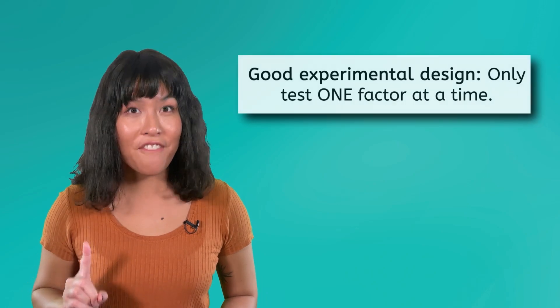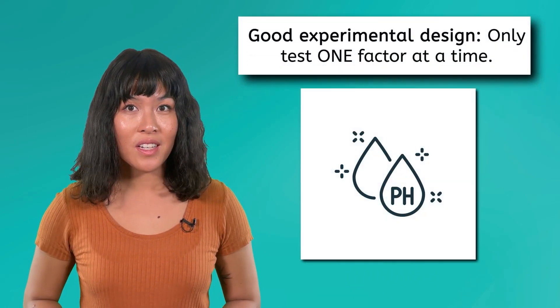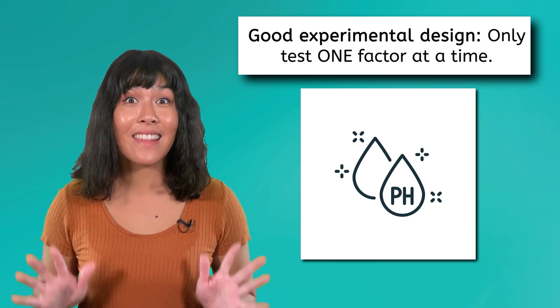As I come up with a procedure for my experiment, I have to keep in mind the principles of good experimental design. Most importantly, I want to be sure that I am only changing and testing one factor at a time, which is the pH or acidity of the water. Everything else has to stay the same.